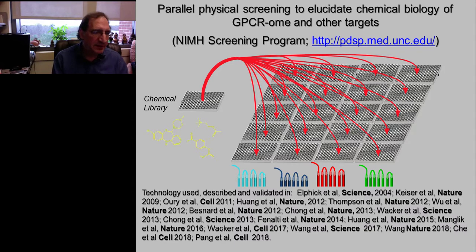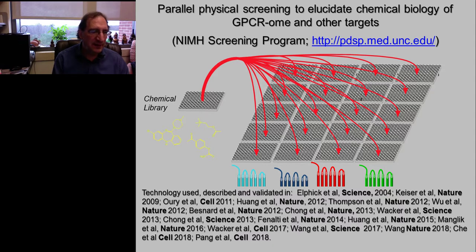This schematically shows how that's done. Basically, every plate would get a different receptor, and then we would screen relatively modest libraries of small molecules against them. Over the years this has resulted in a large number of very important findings summarized in many papers. Part of the success of this program has been our rather unusual and novel form of screening, which we call massively parallel screening, where hundreds of targets are interrogated simultaneously rather than taking a single receptor and screening large numbers of compounds against it.